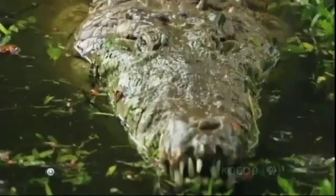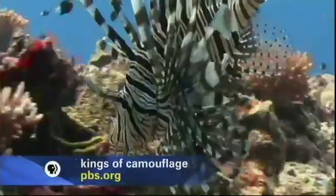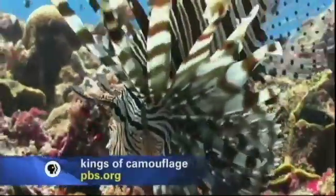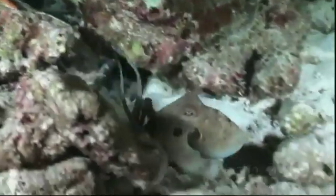Take camouflage. Nature is full of animals that have evolved to stay hidden. The lionfish has a fixed appearance that allows it to fade into a specific environment. But the octopus can change its coloring to blend into different backgrounds.